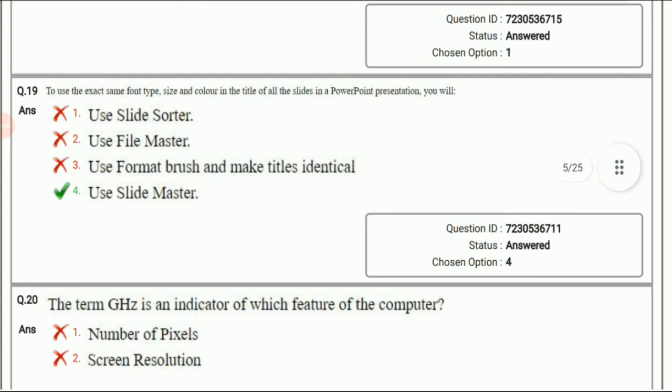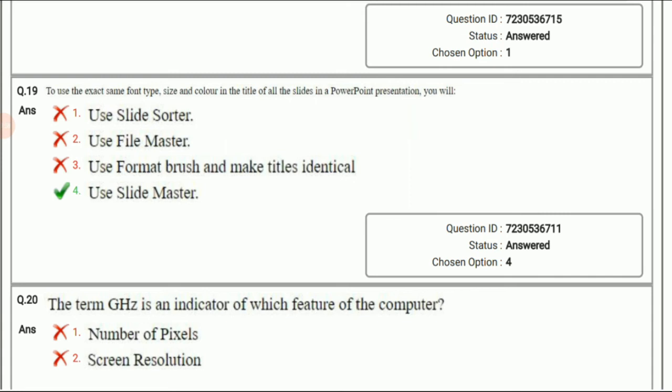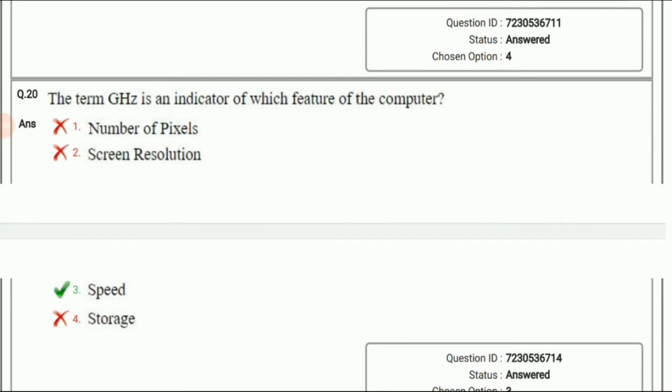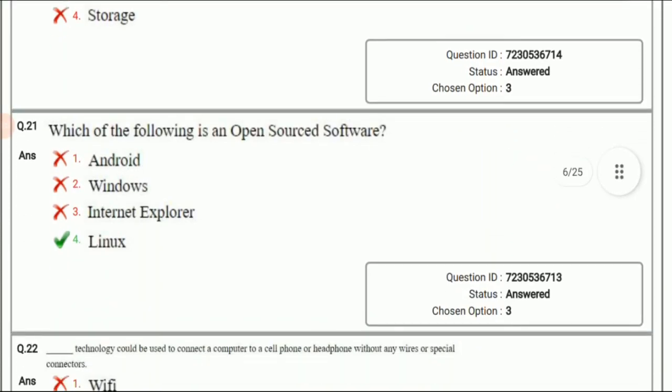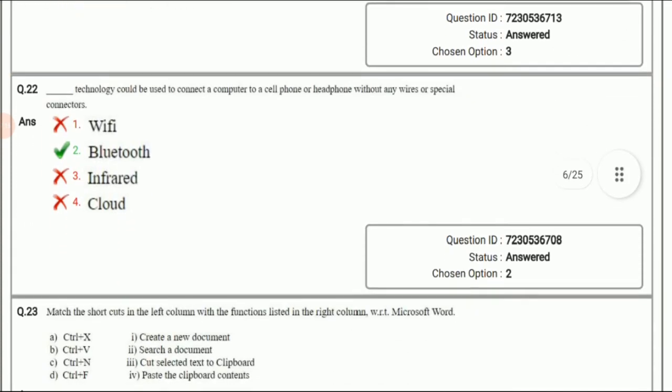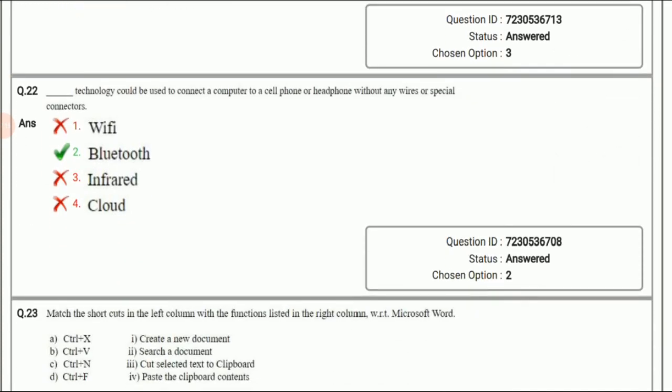Next question: To use the exact same font type, size, and color in the title of all slides in PowerPoint presentation, we will use slide master. Next question: The term gigahertz is an indicator of which feature of the computer. We all know the answer is speed. Next question: Which of the following is an open source software? The answer is Linux. Next question: Dash technology could be used to connect a computer to a cell phone or headphone without any wires or special connectors. The right answer is Bluetooth.